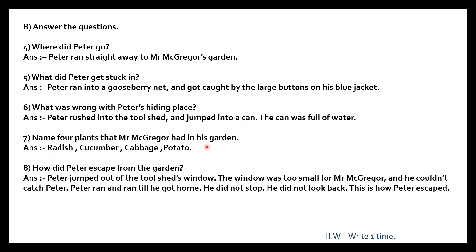The next question: Name four plants that Mr. McGregor had in his garden. So we have radish, cucumber, cabbage, and potato. These are four plants in Mr. McGregor's garden. Once again, the names you can write are: radish, cucumber, cabbage, and potato.